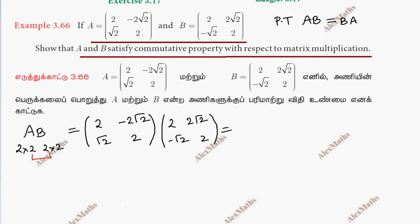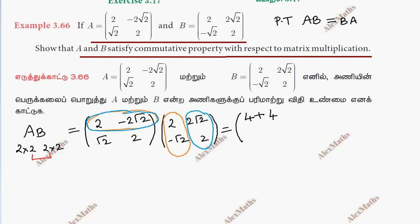Now let us start multiplying. Taking corresponding elements: first row with first column — 2 into 2 is 4, minus 2 root 2 into minus root 2 is plus root 2 times root 2, that gives 4. Then first row with second column — 2 into 2 root 2 is 4 root 2, plus minus 4 root 2.